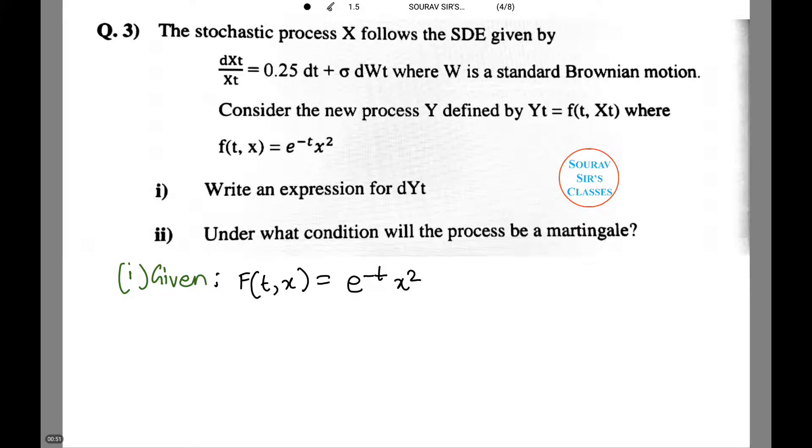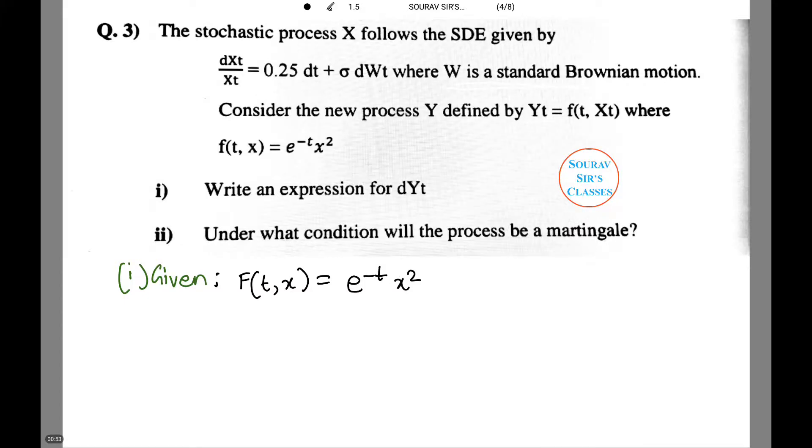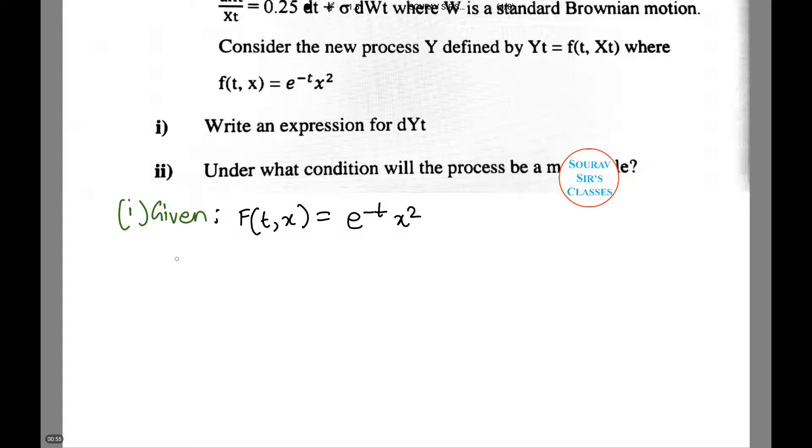Given f(t,x) equals e to the power minus t times x squared. Therefore df/dt is equal to minus e to the power minus t times x squared which equals minus f. Therefore df/dx equals 2 e to the power minus t times x, and d²f/dx² equals 2 e to the power minus t.